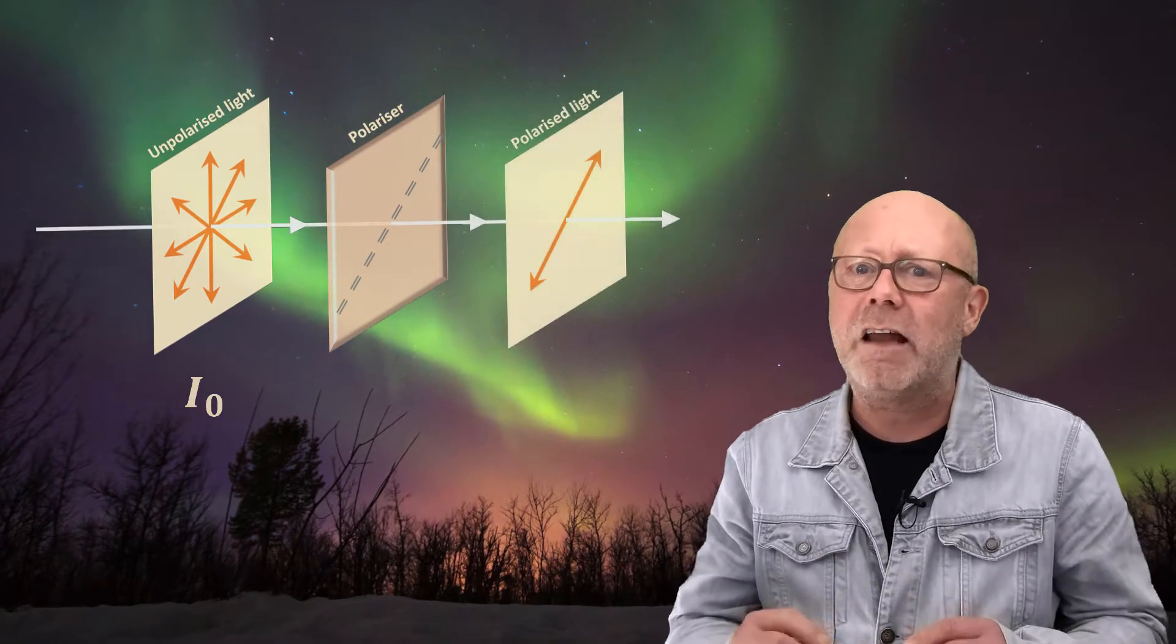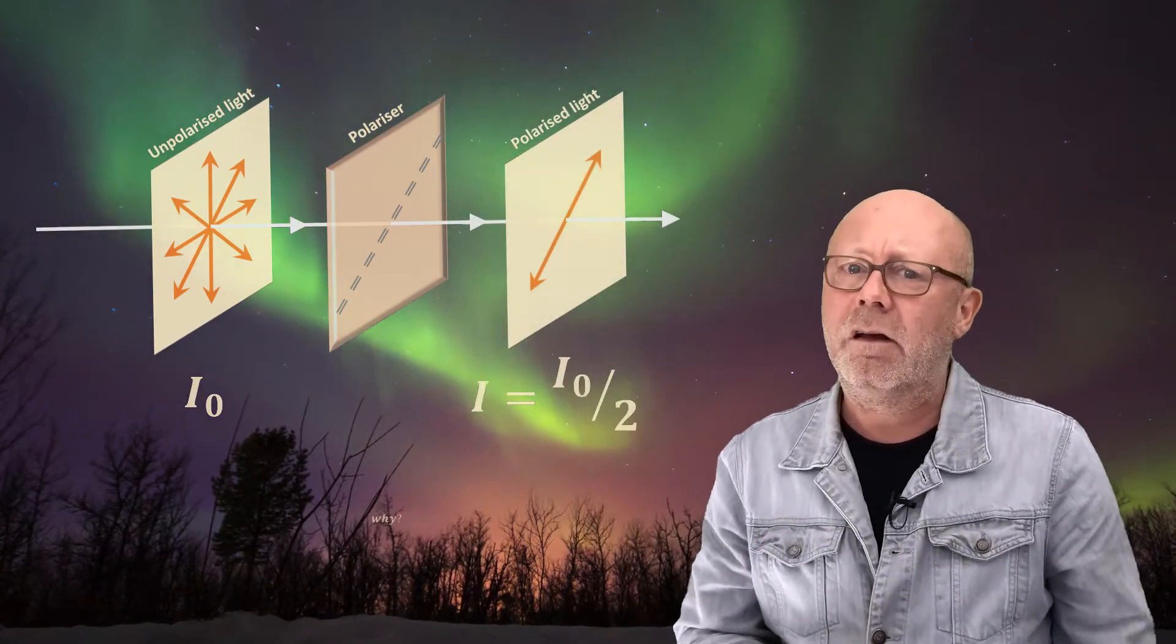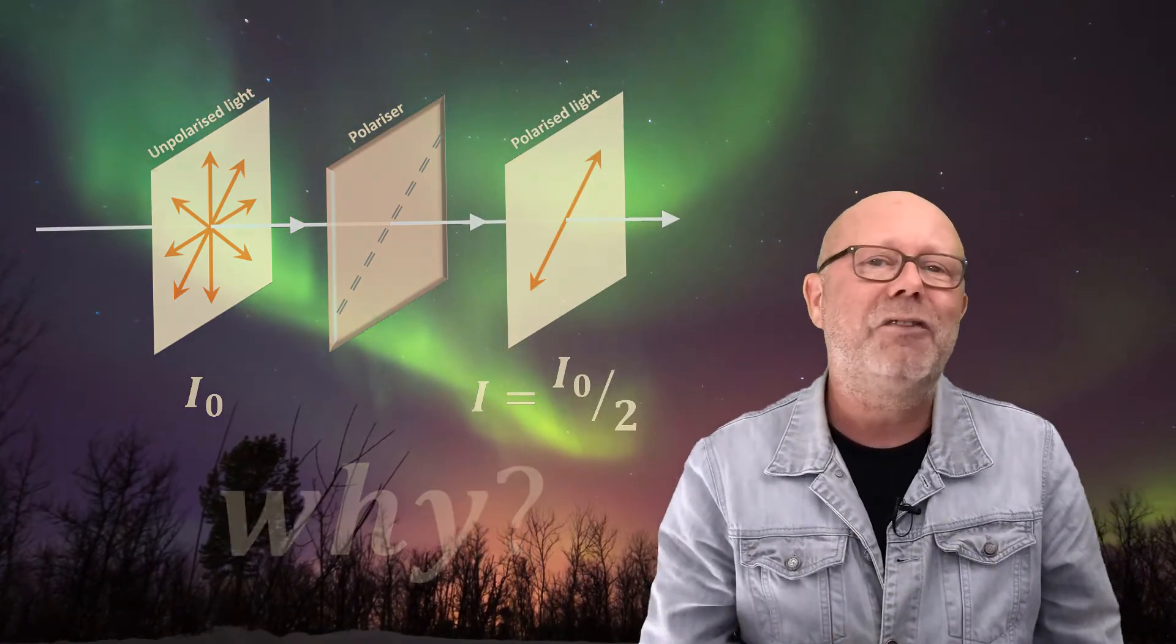When unpolarized light passes through a polarizer, its intensity is cut by exactly a half. Why is that? Let's find out together.